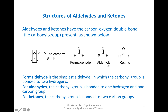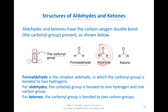Let us turn our attention to another functional group: aldehydes and ketones. They all have in common a carbon-oxygen double bond, also known as a carbonyl group. The variation is based on the groups placed on that carbon. If you have two hydrogens, that's formaldehyde. If you have one alkyl group and one hydrogen, that's an aldehyde — and the entire CHO group is the aldehyde. If there are two alkyl groups bonded to this carbon, it's called a ketone.